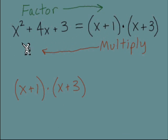Let's do FOIL. So we've got x times x is x squared. Outer x times 3 is 3x. And inner 1x.